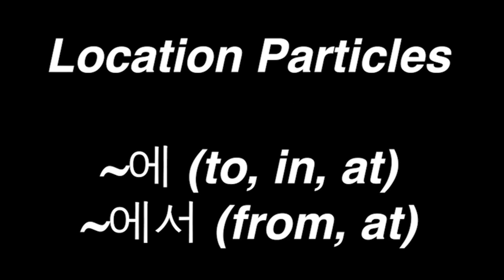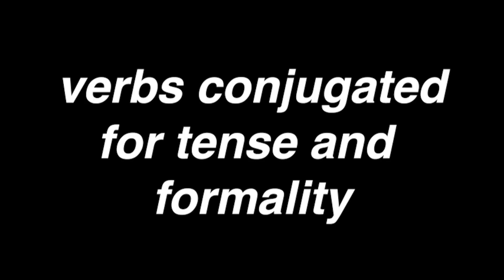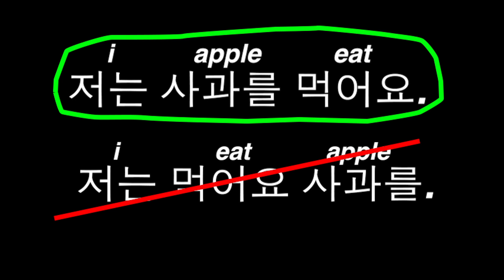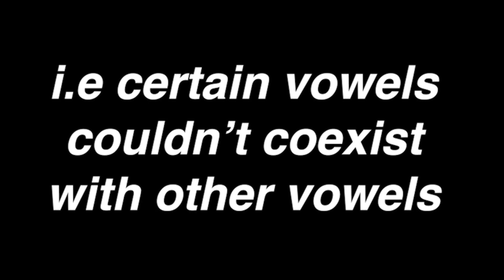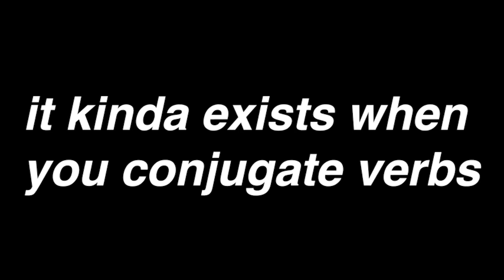Apart from information particles, there's also location particles like 에 and 에서, meaning 'to' and 'from,' but they can both mean 'at' as well, depending on what the verb is. Verbs in Korean are conjugated for tense and formality, with no person marking. They always come at the end of a sentence, but the other arguments can move freely. Korean used to have vowel harmony — certain vowels couldn't coexist in the same word, so when you applied suffixes you had to match vowels. Korean no longer exhibits vowel harmony, but it's still seen when you conjugate verbs.